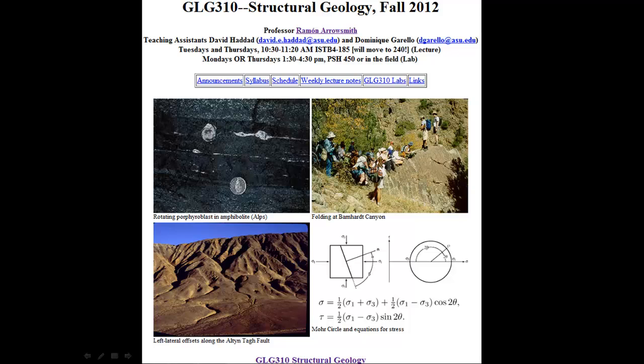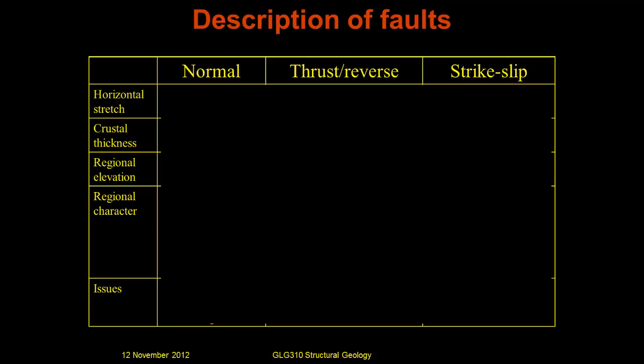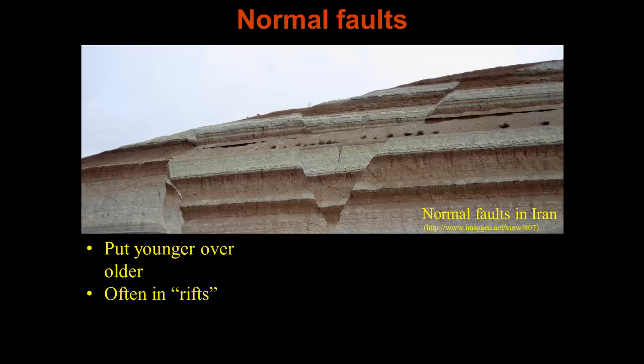In this lecture we're going to continue our discussion of faulting and go through normal faults. We want to remember we can characterize them in terms of their horizontal stretch, what they do to crustal thickness, their regional elevation, and some of the important regional characteristics and other issues we have to remember when thinking about normal faults.